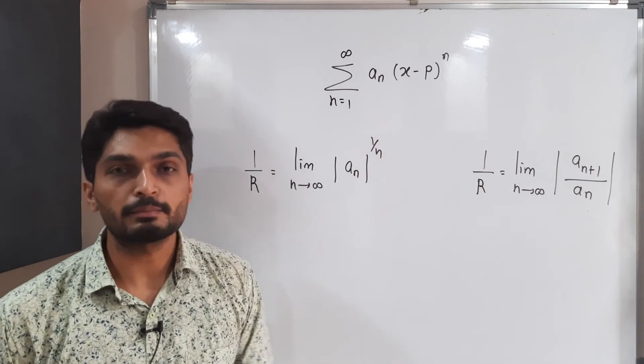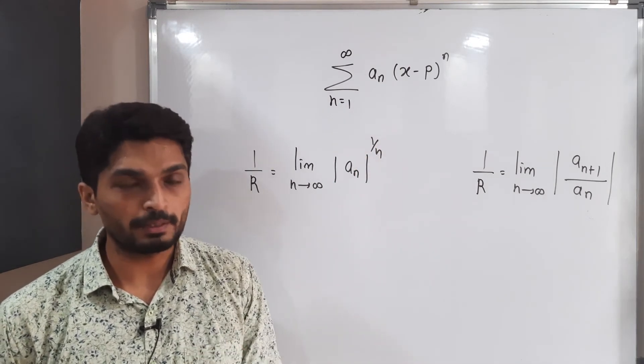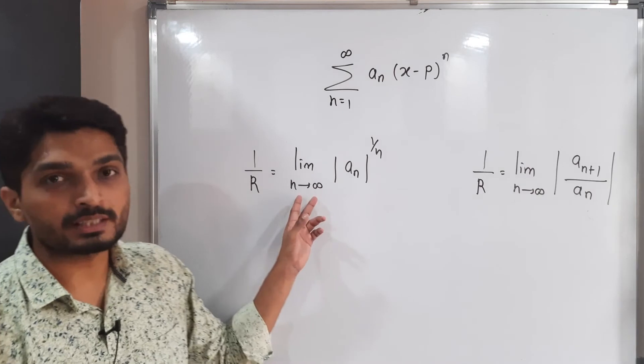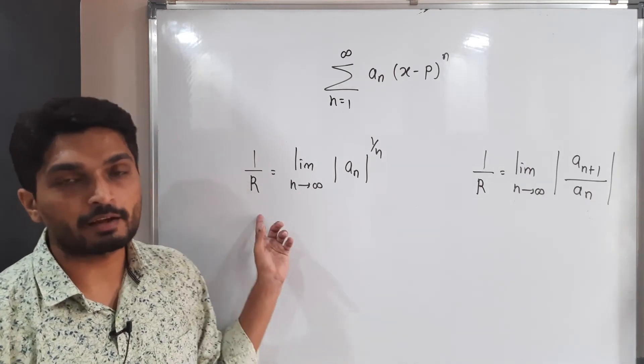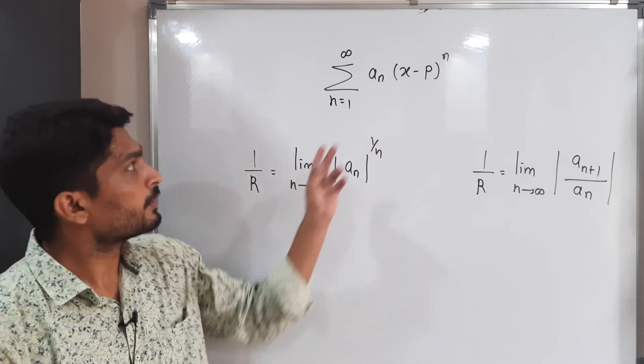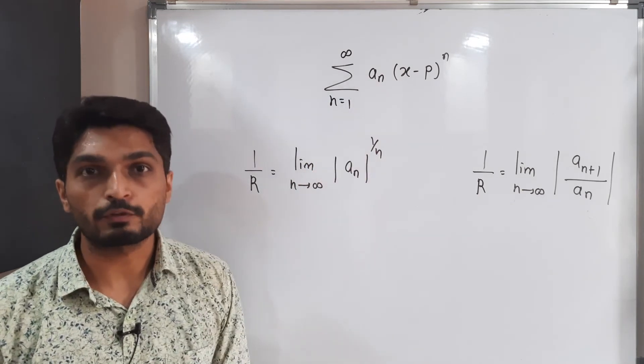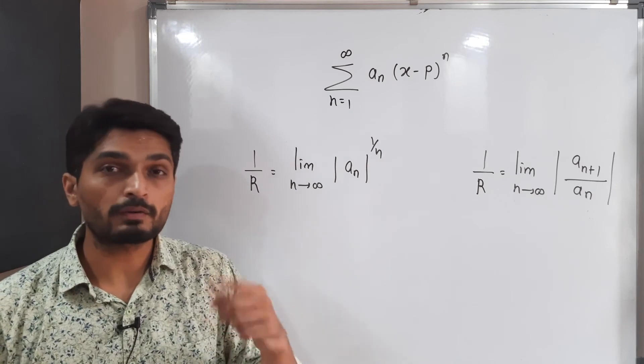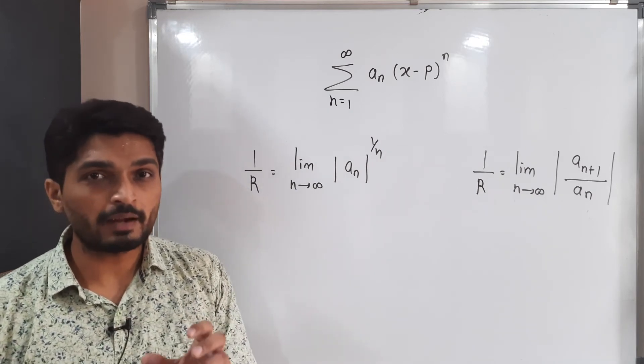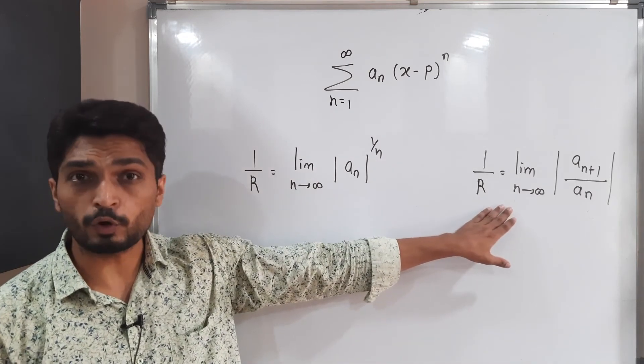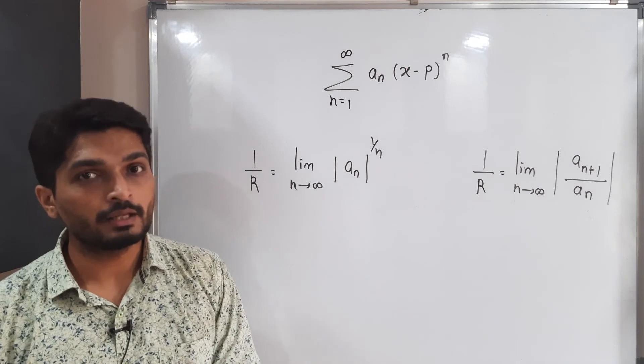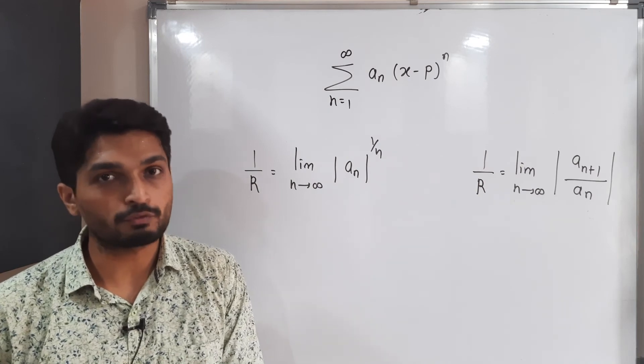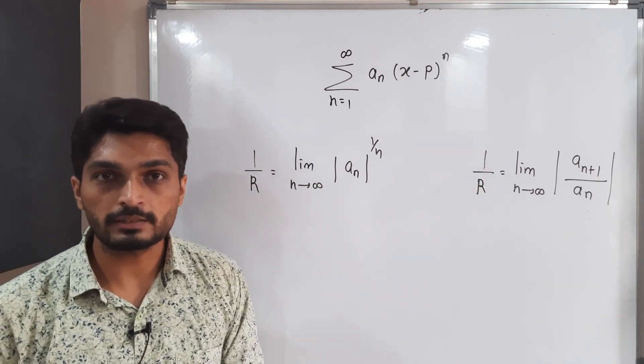So when we have a power series like this, summation a_n(x-p)^n around point p, then we have these two formulas to calculate radius of convergence. So this formula gives the reciprocal of radius of convergence. When you take reciprocal of both sides, you will have the value of R, that means radius of convergence. So here we use the coefficient a_n to find radius of convergence. If it has power n, so that time we go for the first formula since there is nth root. So power n and nth root will get cancelled to each other. But when we have terms n factorial or like that, so normally we go for the second formula. So we take a ratio of a_(n+1) and a_n, and by applying the limit we get the value of 1/R. Getting reciprocal of radius of convergence. Again, by taking reciprocal you will have the value of R, that is radius of convergence.